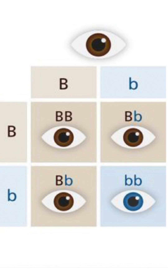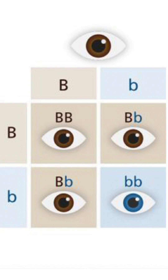Whereas, a recessive character — blue eye color — is expressed only when two copies of the allele are present, that is, small b and small b.